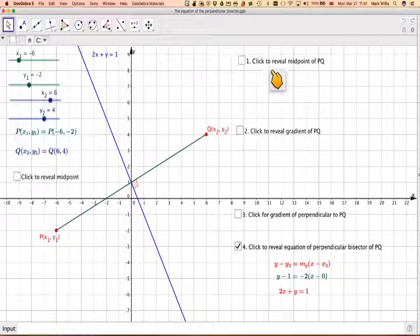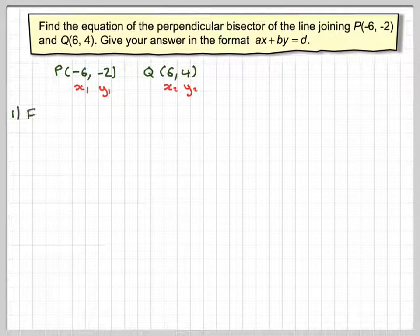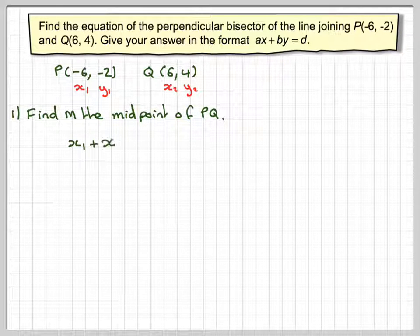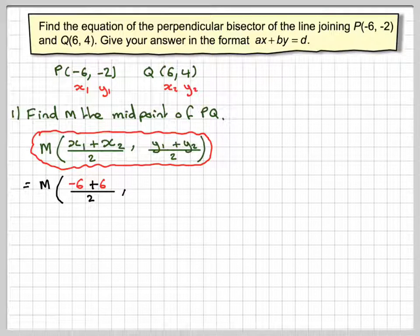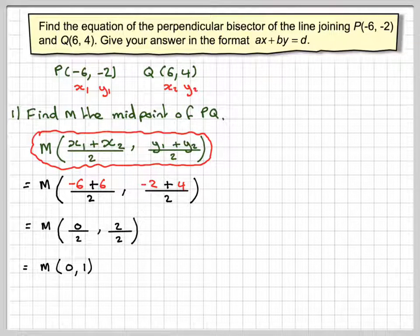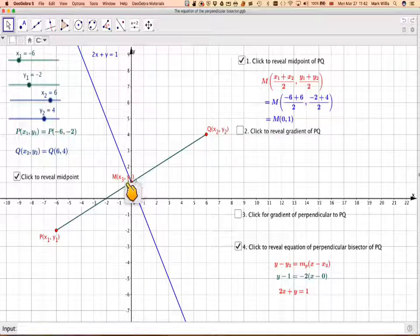Step one is to find the midpoint of PQ. We label the points X1, Y1 and X2, Y2. Note that steps one and two are interchangeable. Using the midpoint formula (X1 plus X2)/2, (Y1 plus Y2)/2, we get (-6 plus 6)/2, (-2 plus 4)/2, which gives 0/2 and 2/2 — so the midpoint is (0, 1). We can confirm this on the graph.